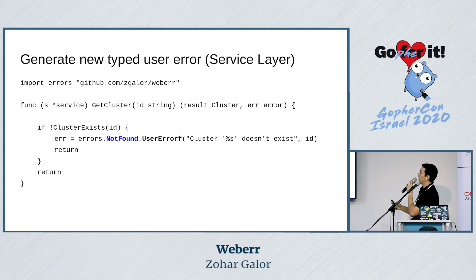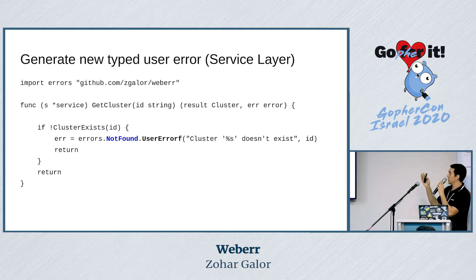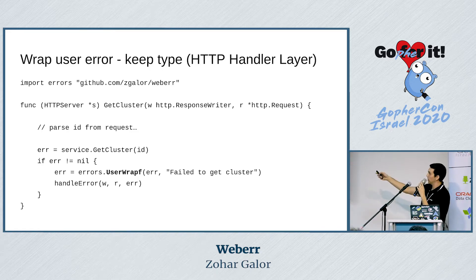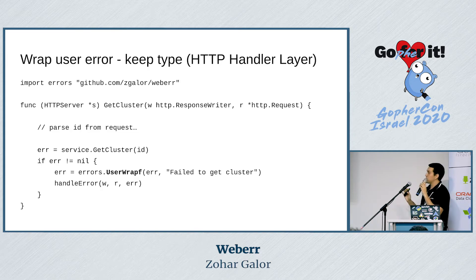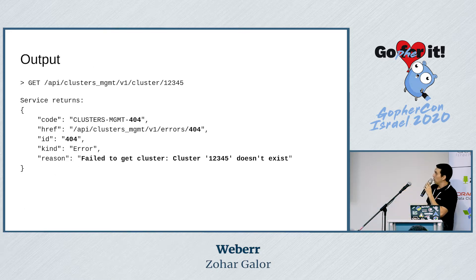Let's look at an example — these are actual examples from our service. For getting a cluster that does not exist: if the cluster does not exist, we first attach the type 'not found', then generate a user error saying 'cluster ID X does not exist'. Going up the stack to the HTTP handlers layer, we call the function from the service layer, get cluster by ID. When it fails, we attach the prefix 'failed to get cluster'. The error library wraps this with the previous error. What it looks like is error code 404, with the reason: 'failed to get cluster, cluster 12345 does not exist'.